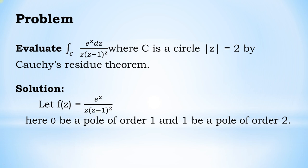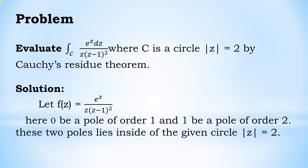These two poles also lie inside the given circle |z| = 2.